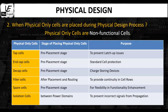The next physical only cell is the end cap cell. End cap cells are added after the macro placement and the site row creation. As they are pre-placed cells, they are positioned before the standard cell placement and are placed at both ends of the placement row to terminate the cell rows. The primary reasons for placing end cap cells are gate protection of standard cells and DRC compliance.